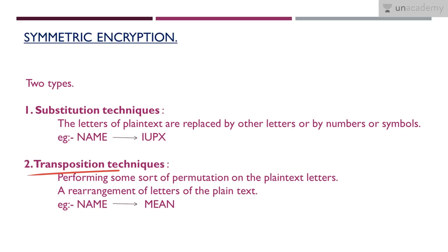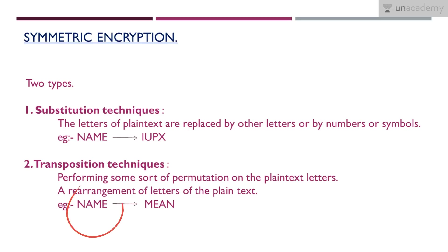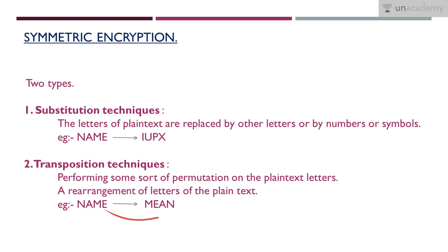The next method is transposition. In this method I am not using any elements outside the plain text — I am just rearranging the elements within the plain text to form the cipher. Using the same example 'name,' I take those four letters N, A, M, E and perform a permutation, just rearranging them. The whole word changes and even the meaning changes — that is transposition.